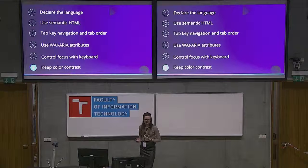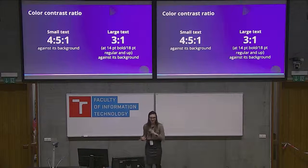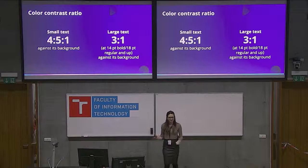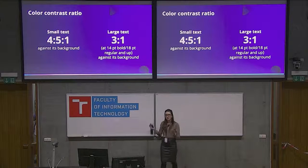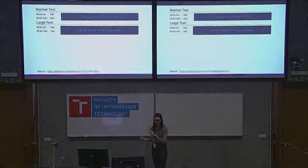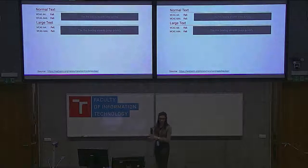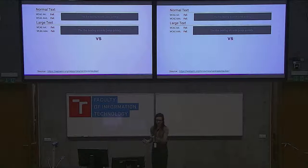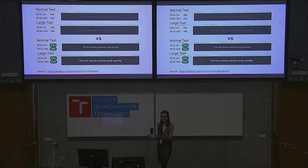Sixth: keep color contrast. There are standards for contrast ratios for small and large text. You never need to remember these numbers because there are many checkers online. For example, the checker from webaim.org is a great website with many accessibility resources. As shown, the test failed with light gray on dark gray. After making the text a bit lighter, the test passed. Very easy to check.